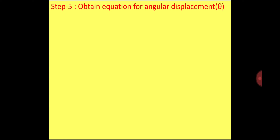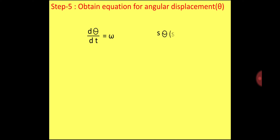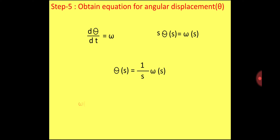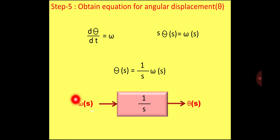In step five, we obtain the equation for angular displacement theta. Since dθ/dt = omega, taking Laplace: S·theta(S) = omega(S), so theta(S) = (1/S)·omega(S). In the block diagram, omega(S) is input to a block with gain 1/S, giving theta(S) as output.